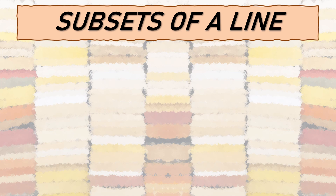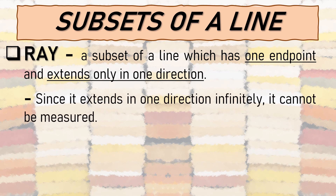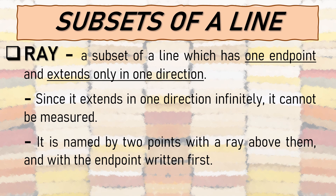Now let us discuss the two subsets of a line. First is the ray. A ray is a subset of a line which has one endpoint and extends only in one direction. Since it extends in one direction infinitely — walang katapusan — it cannot be measured. Notice that only the right side has an arrow, meaning the side without an arrow is the endpoint, and the other side extends in one direction.